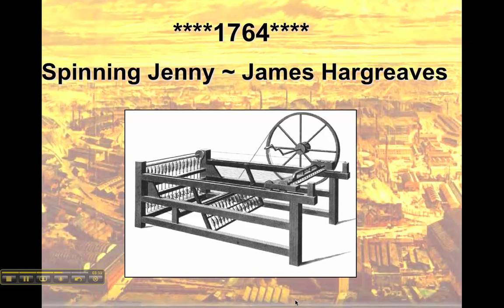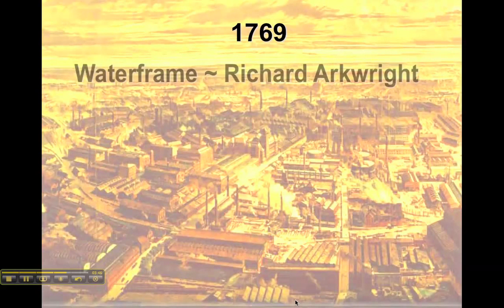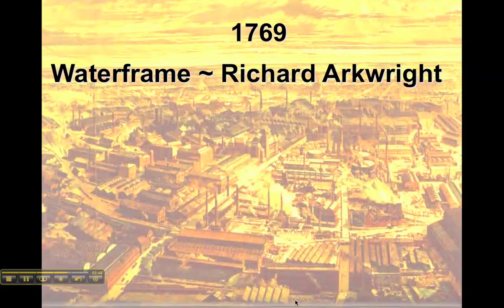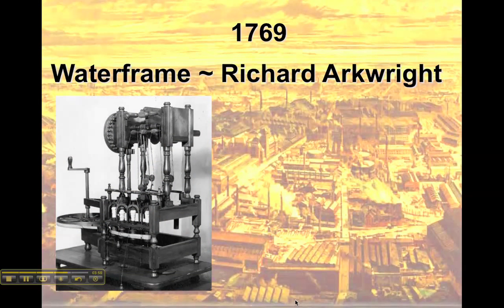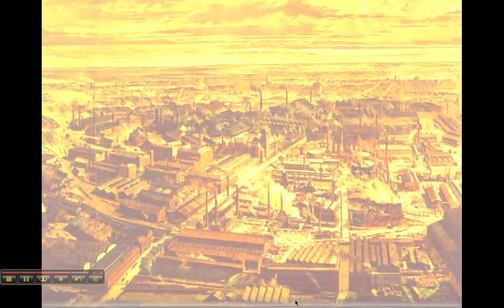The problem, as you might imagine, is that the power of the person spinning is diluted, so the result would be threads that were weaker and coarser than with a traditional spinning wheel. The next invention improved thread quality by powering the spinning wheel with water — rapidly moving river water. This was the 1769 invention called the Water Frame, patented by Richard Arkwright. Wonderfully strong and straight threads were produced, but only one at a time.